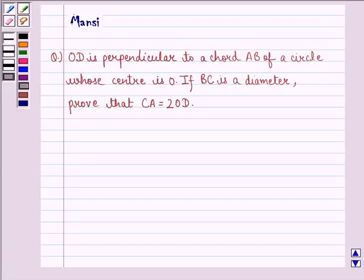Hi and welcome to the session. Let's work out the following question. The question says, OD is perpendicular to a chord AB of a circle whose center is O. If BC is a diameter, prove that CA is equal to twice of OD.